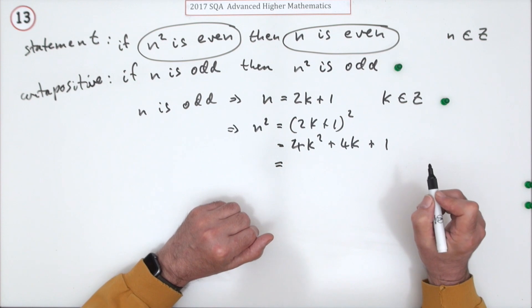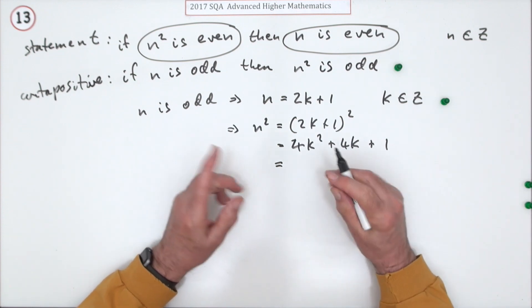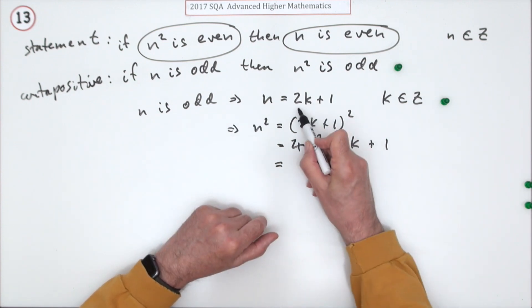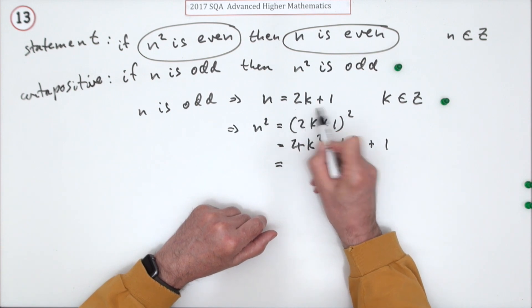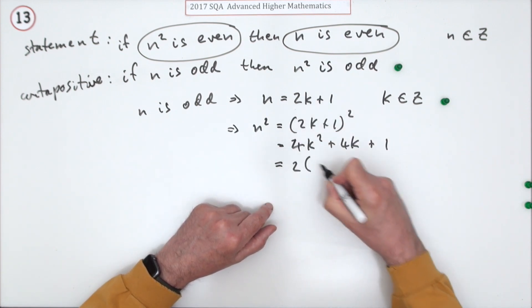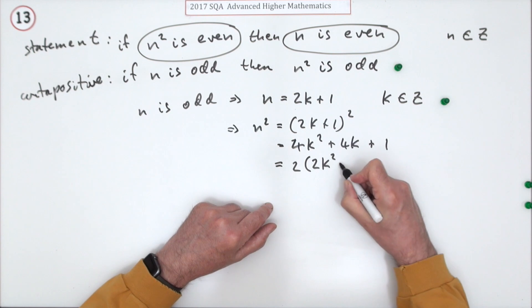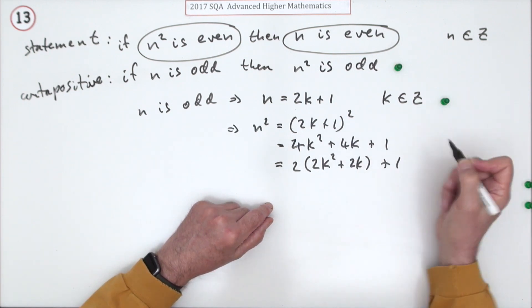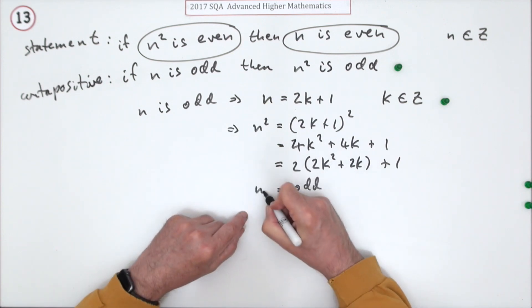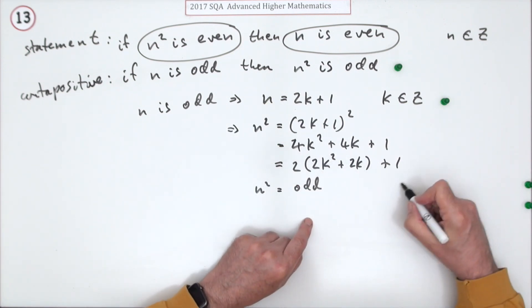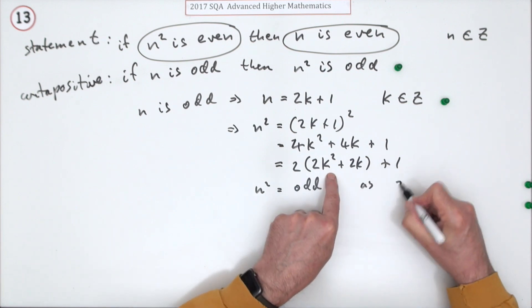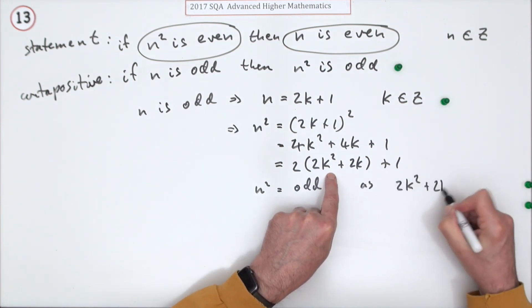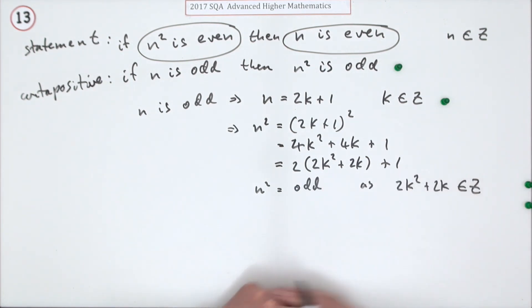Now you don't need to take out the common factor of four. In fact, it's better not to. If you want to show you've got an odd number, you really want it to be a multiple of two plus one. So I'll just take out two. Two times 2k squared plus 2k plus 1, which means n squared is odd as 2k squared plus 2k is still an integer.